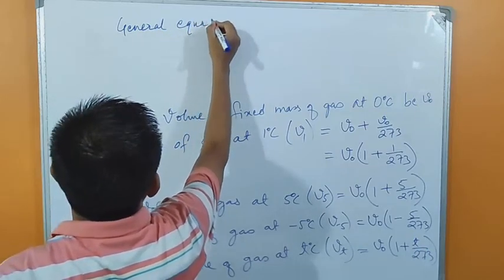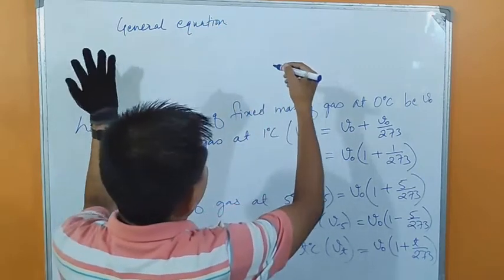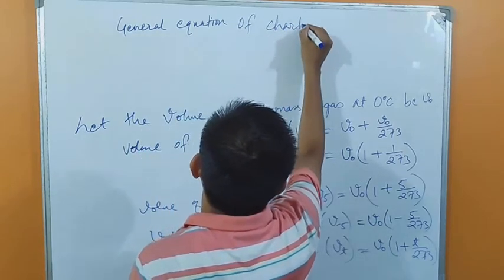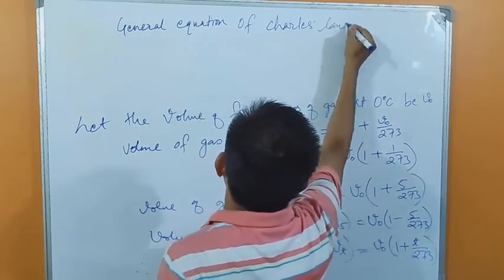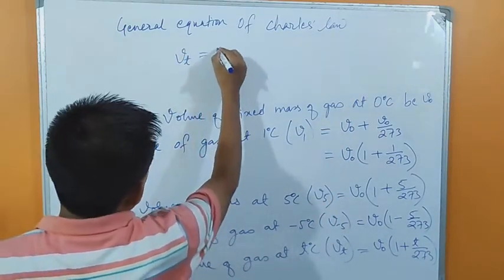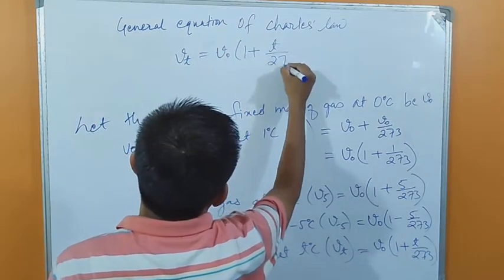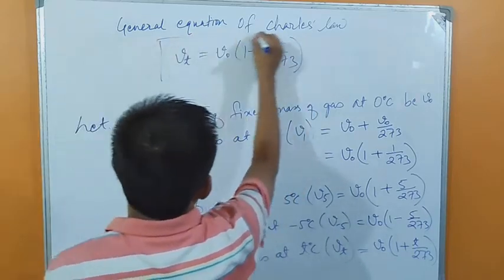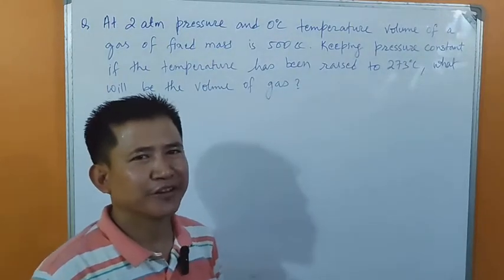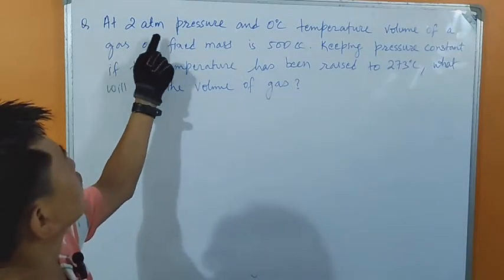Please take a screenshot of this. The general equation of Charles Law is: Vt = V naught × (1 + T/273). Please do not forget this — this is the equation of Charles Law.